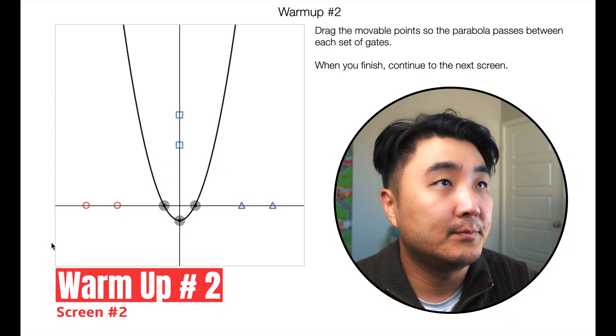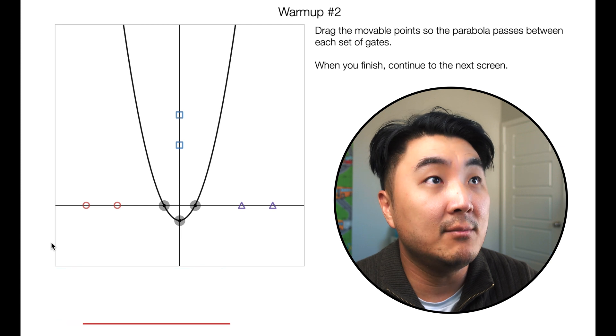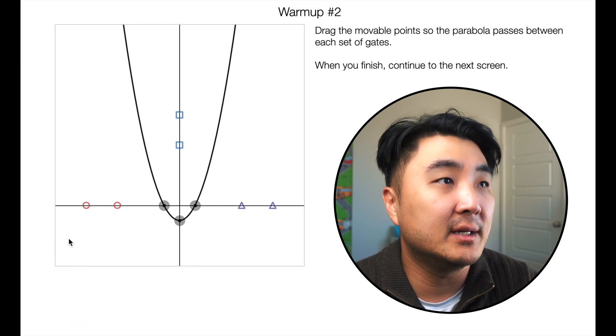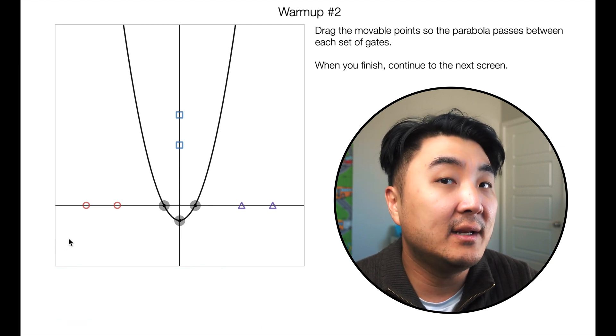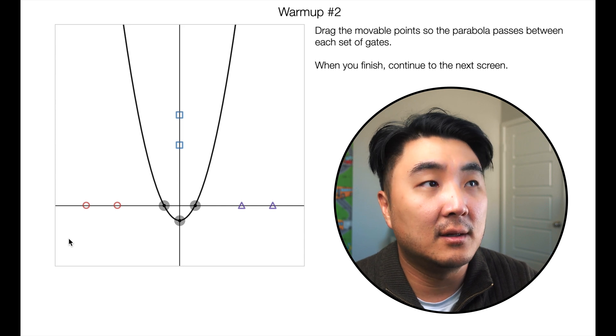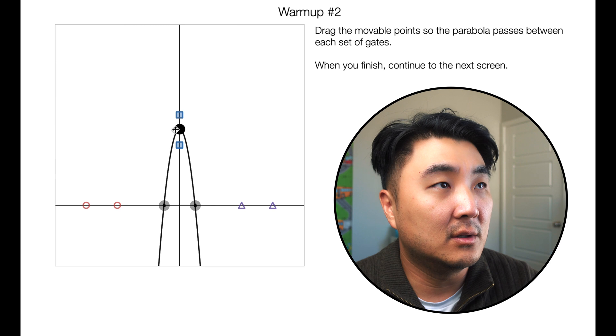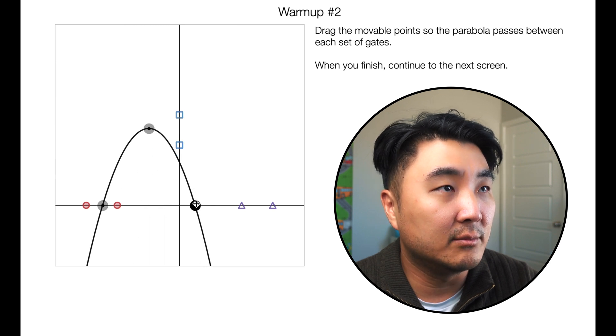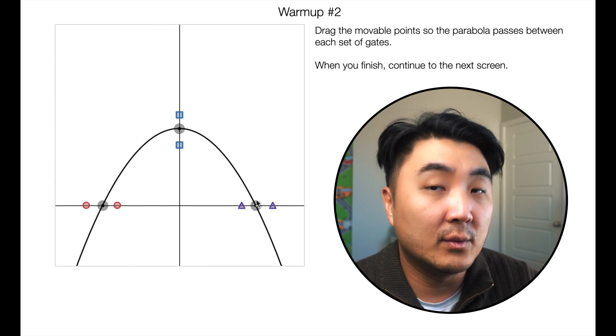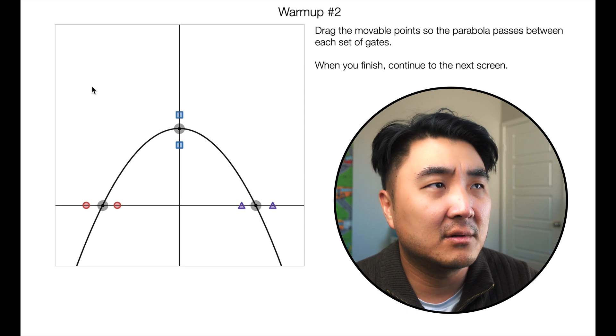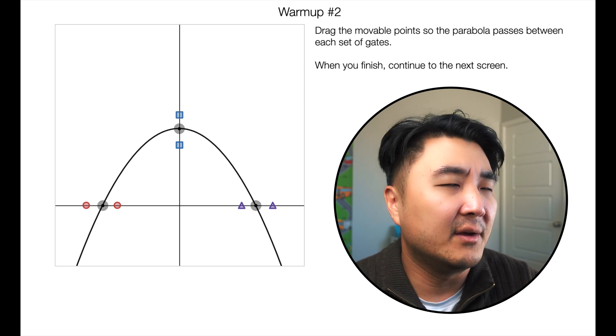Screen two. Warm-up number two. Drag the movable point so the parabola - okay, same idea but now we have three different gates that we're gonna have to pass the parabola through. So let's flip this over and move this over here and move this over there, and there we go. You have little handles. It's pretty easy. I think it's gonna get harder.